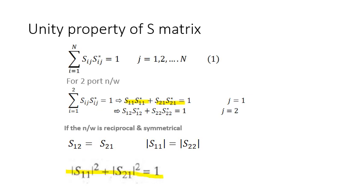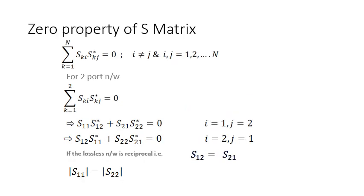The converse of unity property represents the zero property, in which the parameters are not with itself but with the neighboring adjacent coefficients. S11 times S12 conjugate plus S21 times S22 conjugate equals zero. This explains the various properties of S-matrix. Thank you.